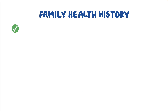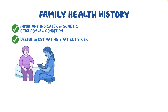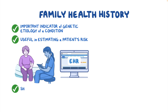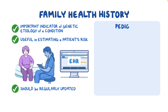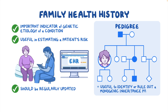As a quick recap: a patient's family health history can be an important indicator of genetic etiology of a condition and can be useful in estimating a patient's risk. There are various methods to collect and represent the family health history, which should be regularly updated. Pedigrees are a classic representation of the biological relationships and medical conditions in a family and can be particularly useful to either identify or rule out a monogenic inheritance pattern.